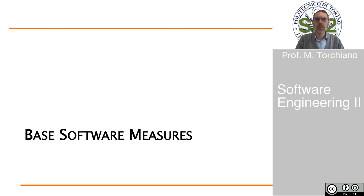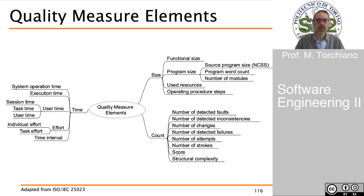Let's talk now about base software measures — those measures that are collected immediately on the entities and are meant to be aggregated using a measurement function to build quality measures. In general, we have three main areas that we can measure: we can measure time, we can measure size, and we can count elements and items. Of course, there are several variations of size, count, and time.